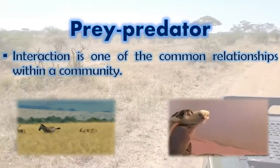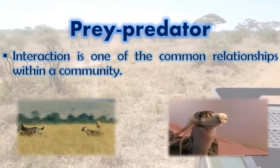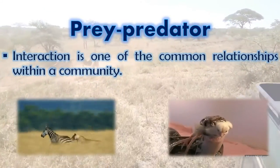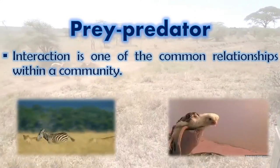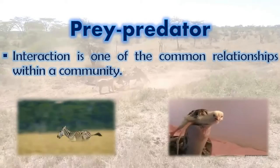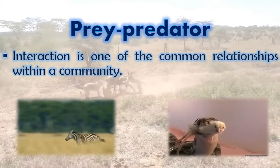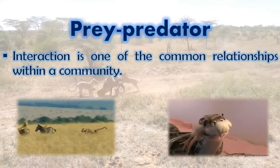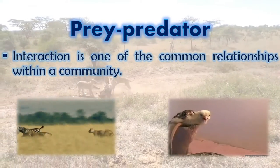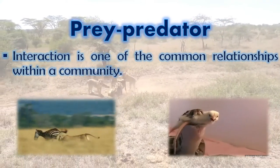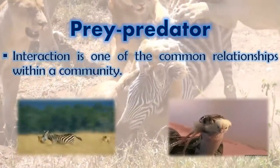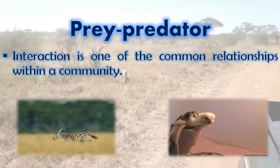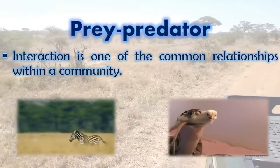In a prey-predator relationship, the predator benefits and the prey loses. Examples are shown in the pictures where zebra and chicks are the prey while the lioness and snakes are the predator.